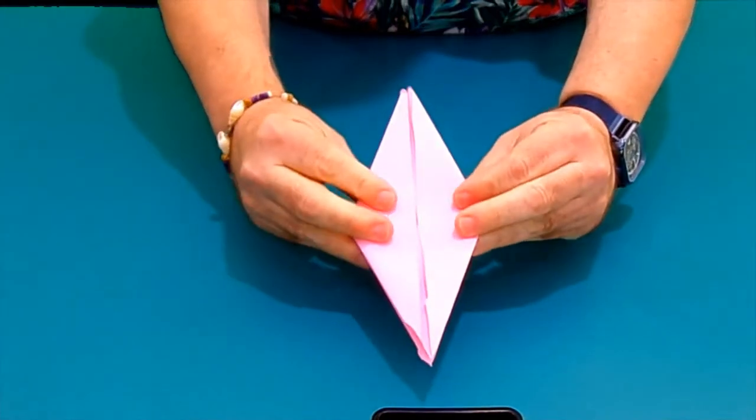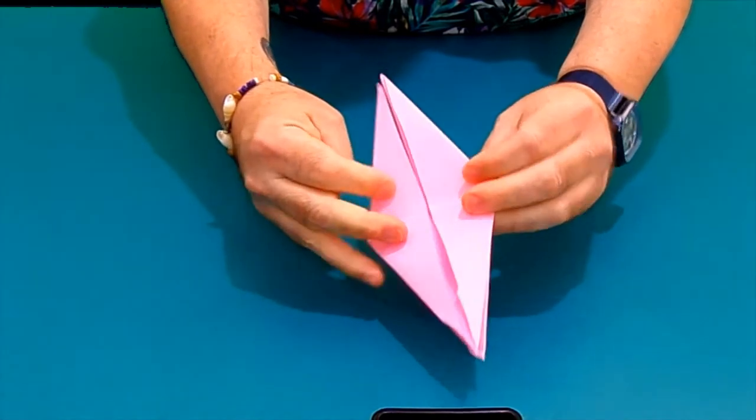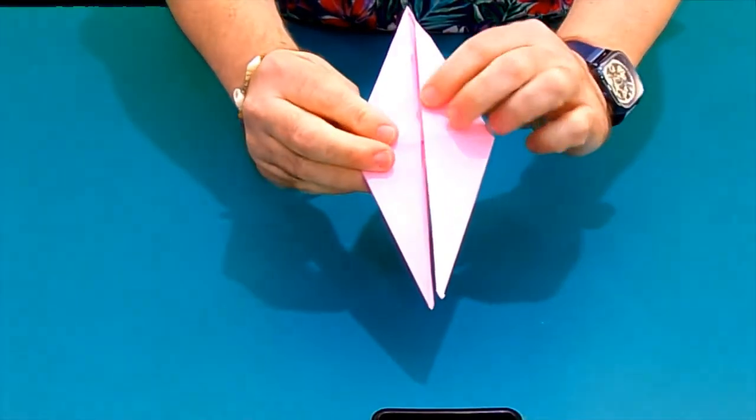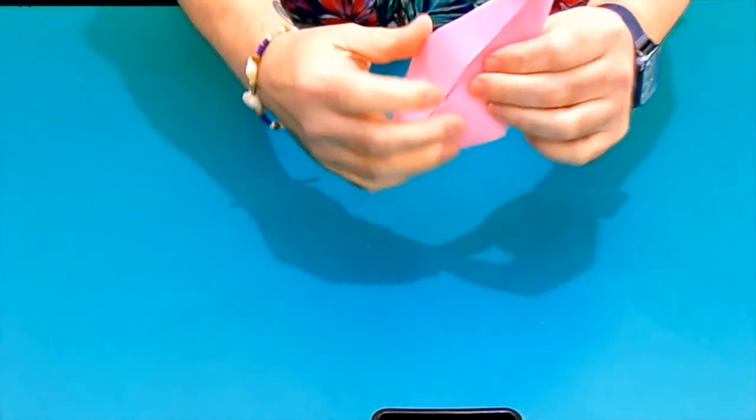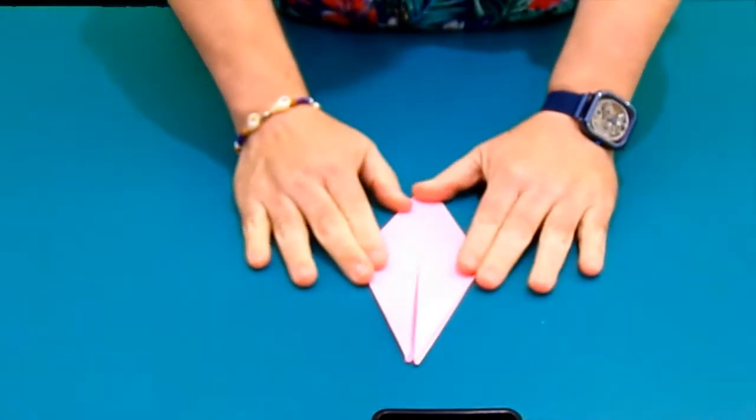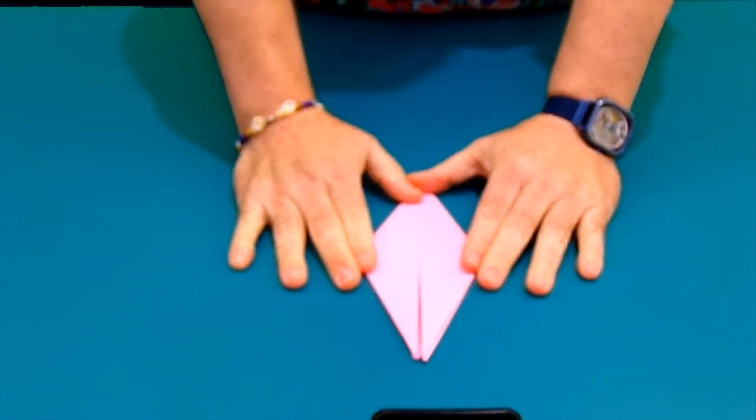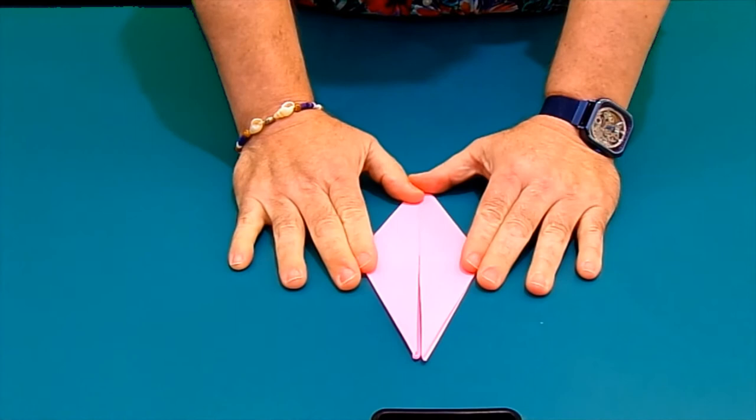You should have two pieces like this and one like this and this. We now only have a couple more folds and we'll have our flapping bird.